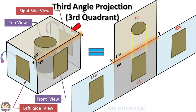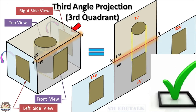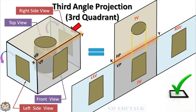All four views are on different planes. To show them on a single plane, all planes are rotated to align with VP, and they all look like a single plane. In third angle projection, the front view is drawn below the XY line and the top view above it. The left side view comes to the left of the front view, and the right side view comes to the right. Countries like the US, Canada, Japan, and Australia follow the third angle projection system.